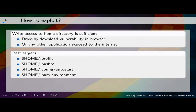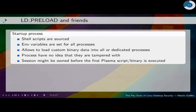Now I come to environment variables — how to exploit a system in the best way. The easiest thing is you get a drive-by download vulnerability in a browser or any other application exposed to the internet. Then you just write into a glorified file like .profile, .bashrc, config/autostart, or PAM environment — those are all wonderful files to write into. All you need to do is set up a few environment variables, best of all LD_PRELOAD, and then you can take over the system.